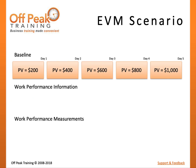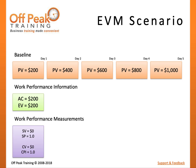Let's revisit our scenario from earlier, this time calculating performance. Our Budget at Completion was $1,000 and the project was scheduled to take 5 days. Since each task represents 20% of the project work, the Planned Value of completing Task A is $200, Task A and B is $400, and so on, up to $1,000 for all work. On Day 1, you complete Task A at a cost of $200. Since you completed 20% of the work, Earned Value is $200. Schedule Variance is zero and Cost Variance is also zero.